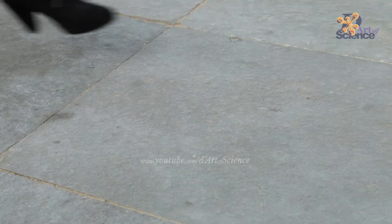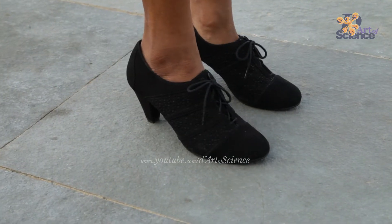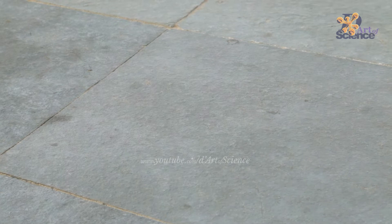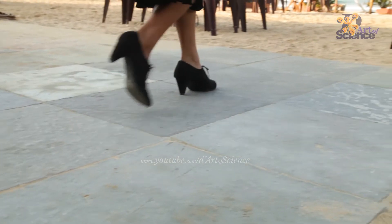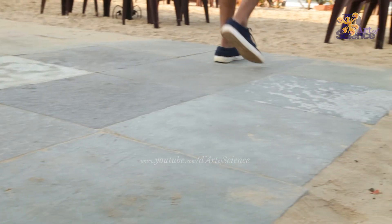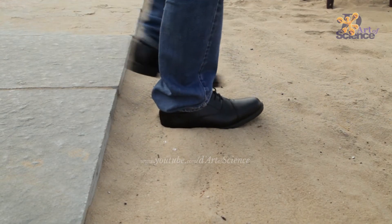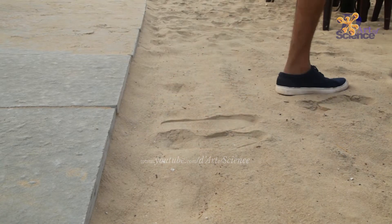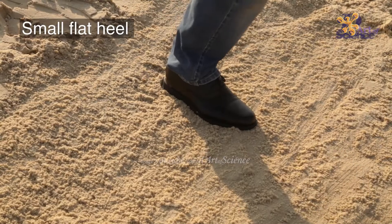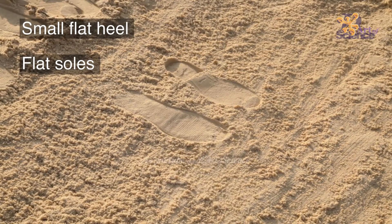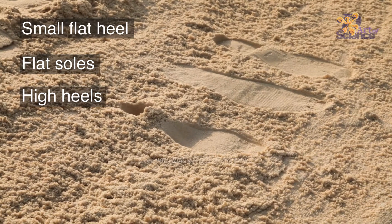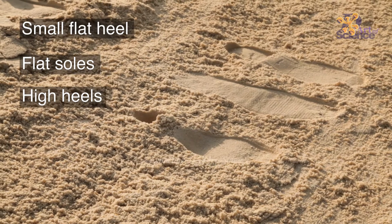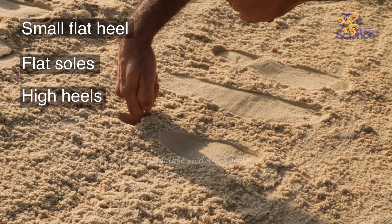Let's take another look at pressure using three types of soled shoes with three people of the same weight so that the downward force remains the same. One is wearing black shoes with small flat heels. Another person is wearing high heel lady shoe and the third is wearing flat soled sneakers. Now they'll take a walk on the sand and see what happens. Here are three imprints together to see how the pressure is least in the flat shoe and the most in the high heel shoe. It means that the same amount of force can be used to produce different pressure by changing the area of interaction.